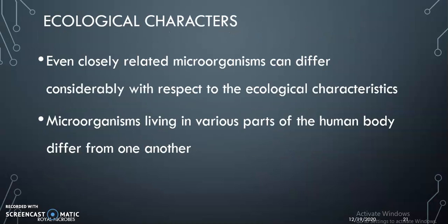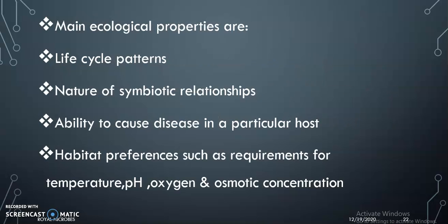Ecological characters: closely related organisms can differ considerably with respect to their ecological characteristics. Microorganisms living in different parts of a human body will differ from one another. Main ecological properties employed include life cycle patterns, nature of symbiotic relationships, ability to cause disease in a particular host, and habitat preferences such as requirements of temperature, pH, oxygen, and osmotic concentration.